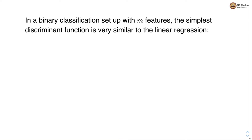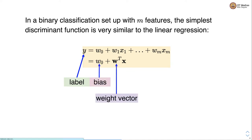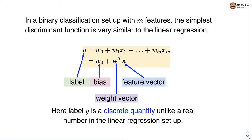In a binary classification setup with m features — binary classification means there are two classes — the simplest discriminant function is very similar to linear regression. The discriminant function predicts the label y as a linear combination of features: y = w0 + w1*x1 + w2*x2 + ... + wm*xm. In vectorized form, y = w0 + w^T x, where y is a discrete label, w0 is the bias, w is the weight vector, and x is the feature vector.